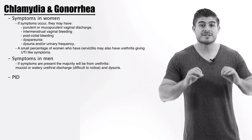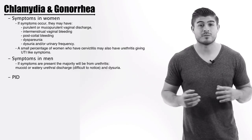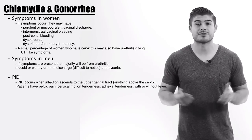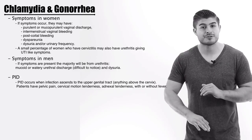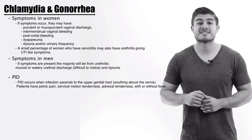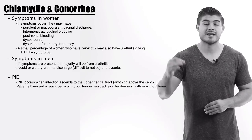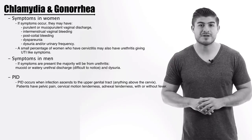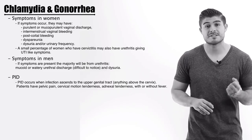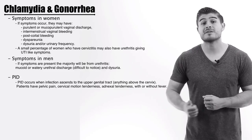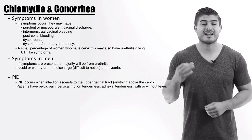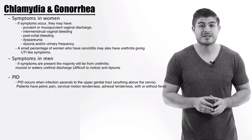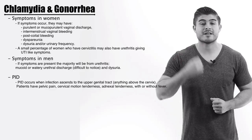In women, cervicitis is considered uncomplicated infection. The problem begins once we ascend into the upper genital tract. Anything below the cervix is lower genital tract; anything above is upper genital tract. Once we hit the upper genital tract, this is when we have PID — pelvic inflammatory disease. PID will have all the symptoms of cervicitis, but we're also going to have pelvic pain, which is the main symptom. We can also have adnexal tenderness, cervical motion tenderness, and fever — with fever depending on severity.